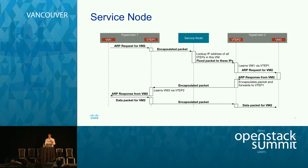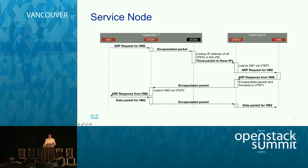Previously the sequence diagram showed a hypervisor service node and a second hypervisor. Now we have a local distributed service node on the transmission side. The only real difference is that we're sharing state with a distributed cache rather than a central server.